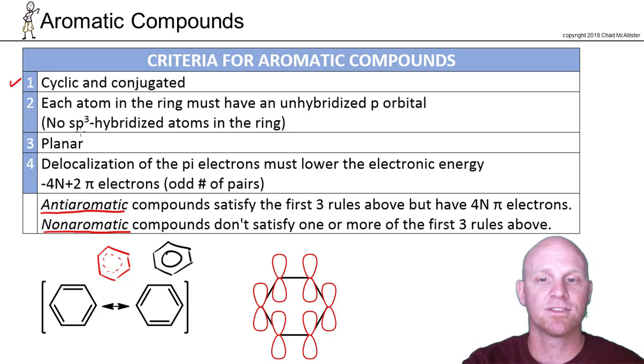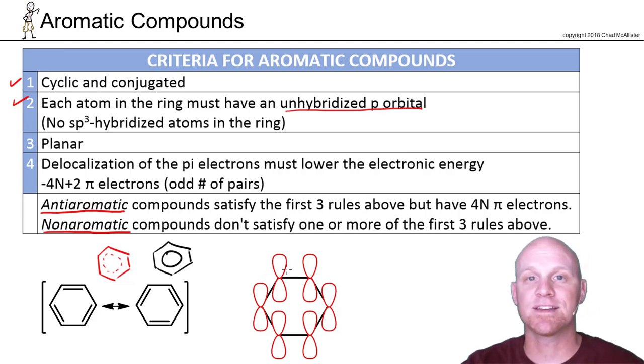And the idea of being a completely conjugated system is that every atom in the ring has to have an unhybridized p orbital. So if we look at kind of benzene here, every carbon in benzene is sp2 hybridized. Being sp2 hybridized, that third p orbital is not hybridized at all. And so every carbon in benzene has got a p orbital.